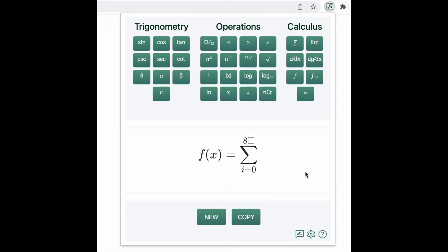Type 8 above the sigma. To get out of the sigma, again, press the forward key. To write a fraction, press the fraction button in the operation section.